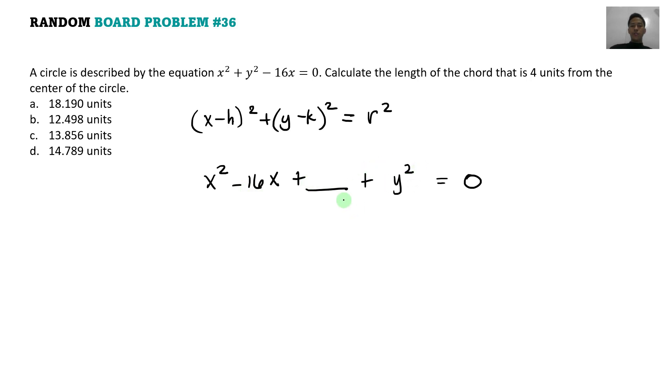So dito, as you can observe, ang pwede lang, ang kailangan lang natin i-complete square dyan is yung may x. So kasi yung y squared, okay na siya. So 0 yung k natin doon. So wala siyang constant dito. So here, kailangan natin mag-complete square to.